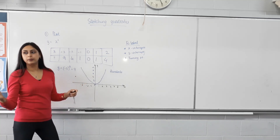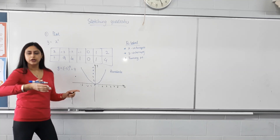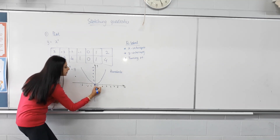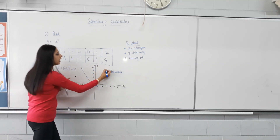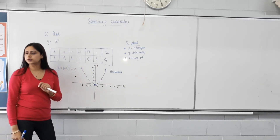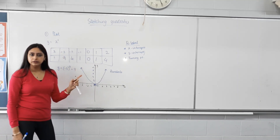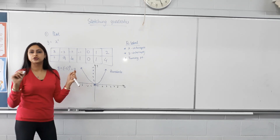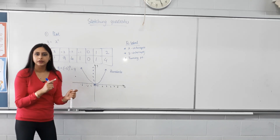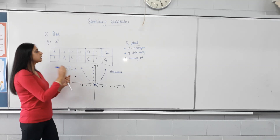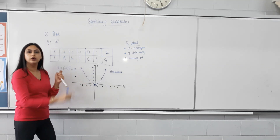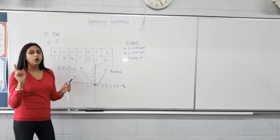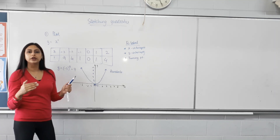There will be parabolas that are upside down, in which case the turning point will be the maximum. The turning point here is zero comma zero. Does the graph just end or does it keep going? It keeps going, so we put arrows on it. We won't plot again from now on — we'll use technology to see what happens when we change the equation, and we'll only sketch. What does a quadratic graph look like? A parabola.